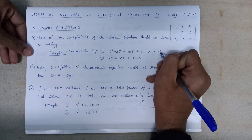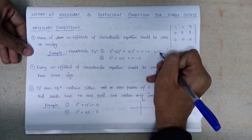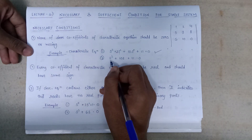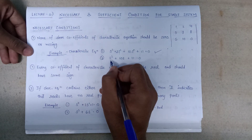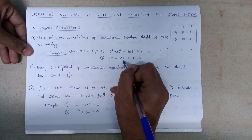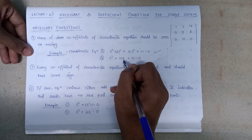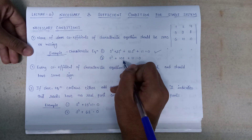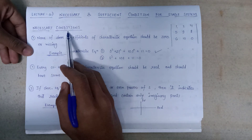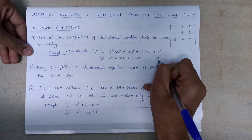On the other hand, in the second example, s³ is present, but the s² term is missing — directly the coefficient of s is present, but s² is absent. So this equation does not satisfy the necessary condition and is therefore invalid.